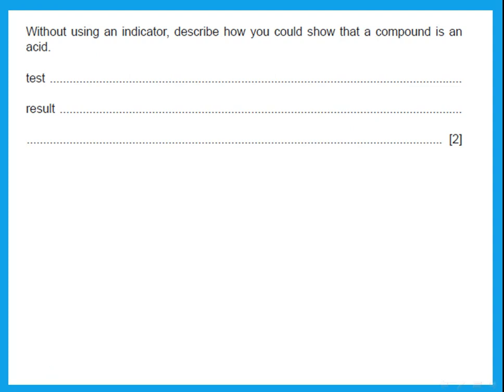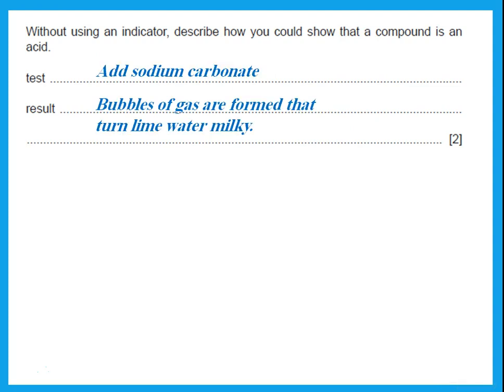Without using an indicator, describe how you could show that a compound is an acid. Remember that acid is used to test for carbonate, so you can reverse it — use carbonate to test for acid. Add sodium carbonate: if it is an acid, you should get bubbles of gas that turn limewater milky. These tests can be used in opposite directions.